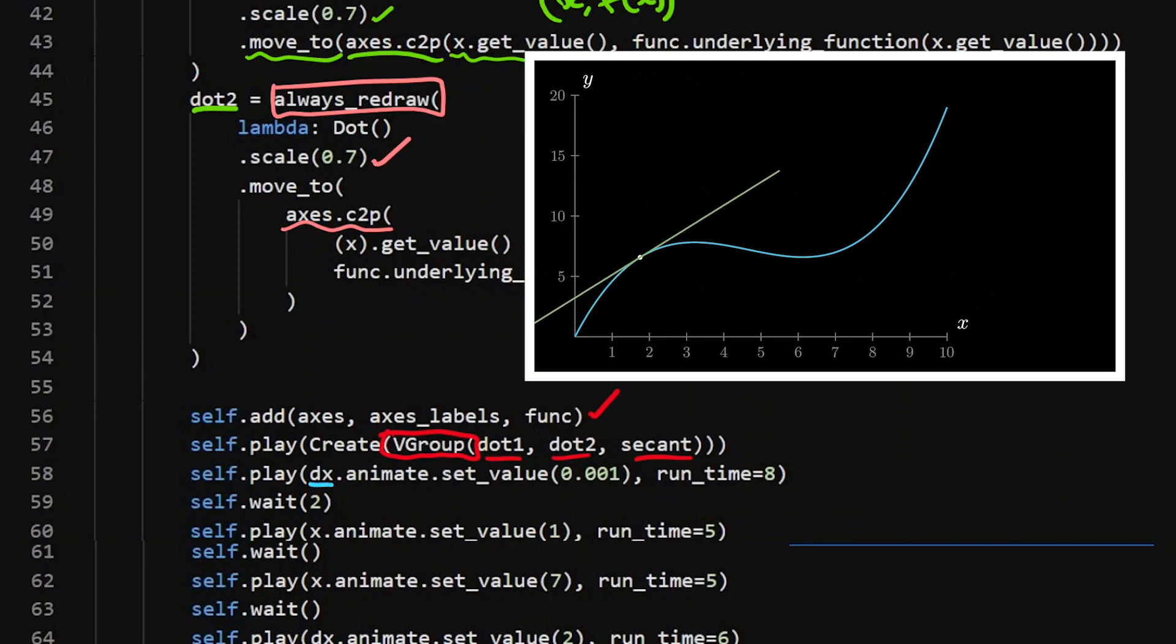I'm just animating my value trackers out here. I'm saying dx, animate it. So make it change, set the value to that. So it's going to go from two to 0.001 in eight seconds. Then I want to wait. So I want it to do that. I want to wait and everything that's going to be happening here.